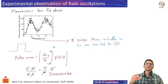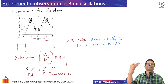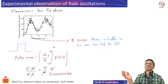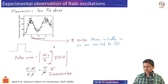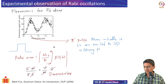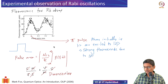So all the atoms are now in the excited state, which means they will spontaneously emit. A pi pulse implies strong fluorescence due to spontaneous emission.